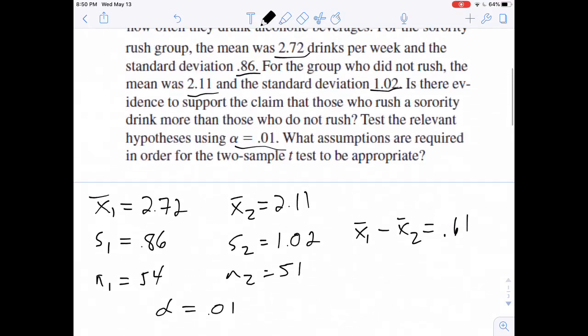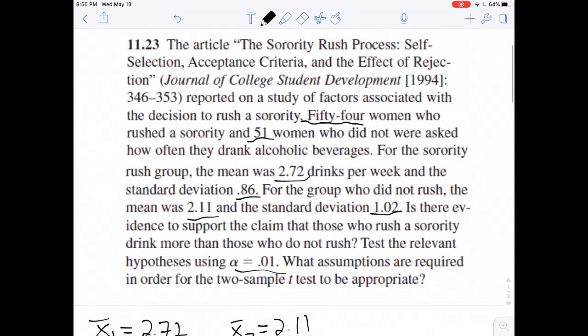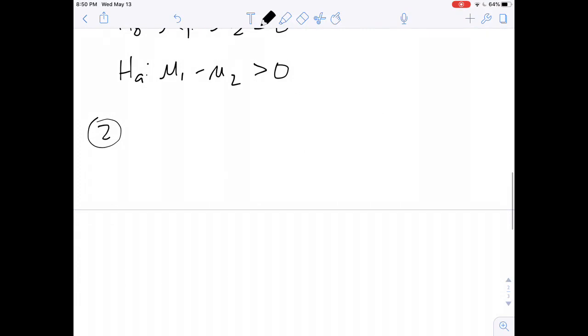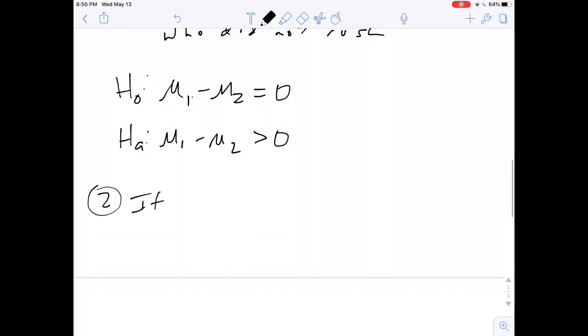One thing about this one is when it went through the problem statement it didn't talk about the sample being random. So what I usually do if it's not stated to be random is I'll just note that. So I'll say it does not appear that these samples were random. So I'll note that, I'll continue with the test, but again I will note that that condition does not seem to be met.